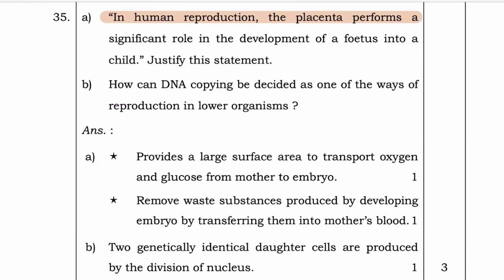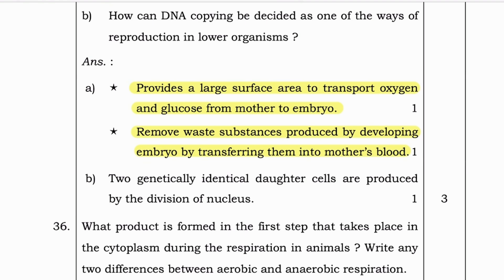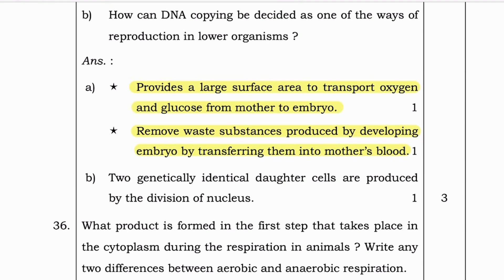Next question: In human reproduction the placenta performs a significant role in the development of the fetus — justify. The placenta provides a large surface area to transport oxygen and glucose from mother to embryo, and it removes waste substances produced by the developing embryo by transferring them into the mother's blood.